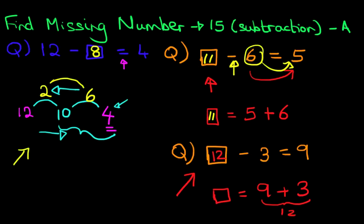So that is how we do find missing number with numbers up to 15 and we've done subtraction at the same time.